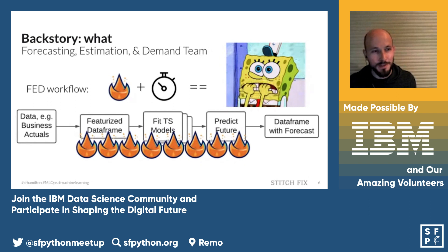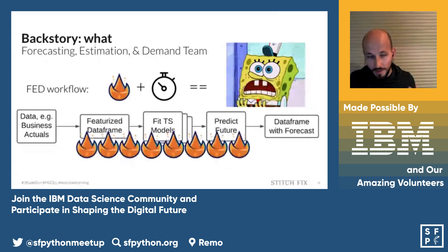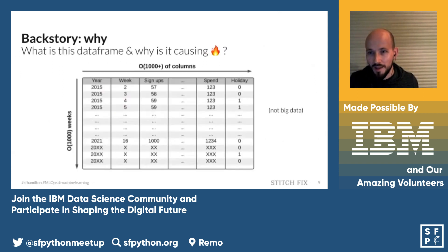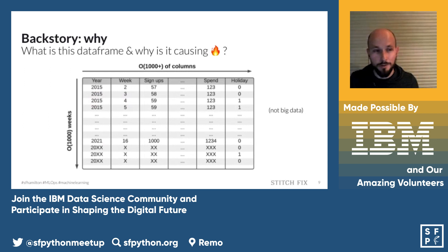What was happening was that this team was kind of on fire, or at least under the gun. Their pipelines and models were breaking down — there was pressure to deliver data for business decisions, but the pipelines were a large pain point. The biggest problem turned out to be in creating this featurized data frame. This data frame is actually quite wide — on the order of thousands of columns — containing things like week signups, and the row count is also in the thousands.